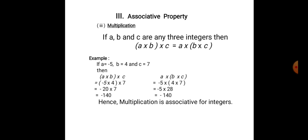On the right hand side, a into (b into c) is equal to minus 5 into (4 into 7). 4 into 7 is 28. Minus 5 into 28 is also minus 140. Both left hand side and right hand side are equal. Hence, multiplication is associative for integers.